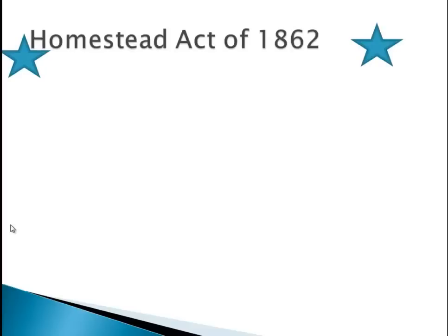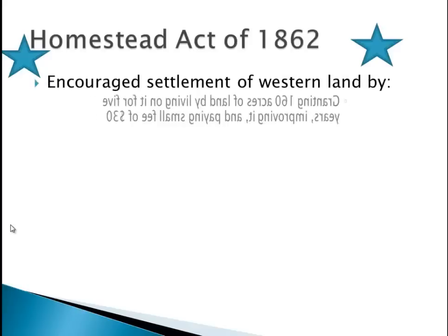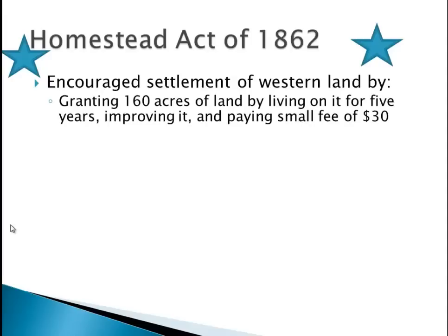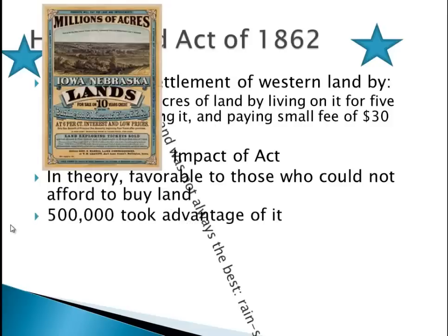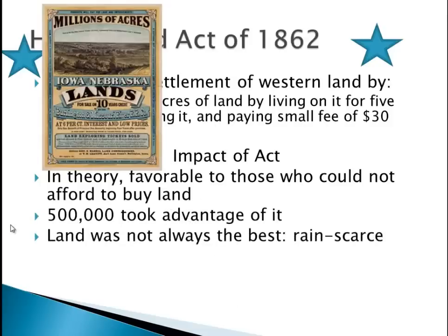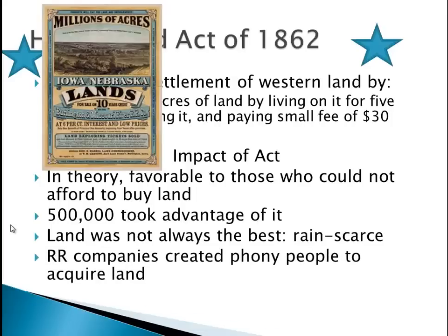In 1862, in addition to the Morrill Land Act discussed in Chapter 25, Congress passed the Homestead Act of 1862. This encourages settlement of western land — it tells people to move out west. They offered 160 acres: live on it for five years and pay only 30 dollars to the federal government, and the land is yours for a very cheap price. 500,000 Americans took advantage of it. However, the land was not always the best — a lot of it was rain-scarce and hard to farm. Railroad companies also set up phony names to get free or discounted land. This encouraged western development.